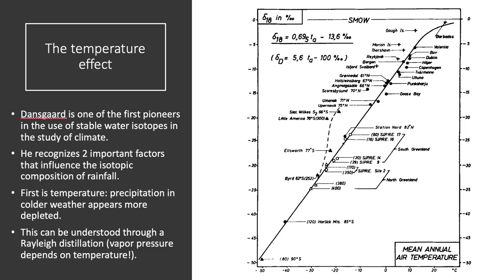He started realizing that rainfall had a certain isotopic composition, and freshwater had a different isotopic composition. This led to the use of water isotopes in the study of climate. Dansgaard recognized two important factors affecting the isotopic composition of water. The first is the temperature effect: precipitation in colder weather appears more depleted — it has lower abundance of heavy isotopes — than precipitation in warmer weather. This can be understood through a Rayleigh distillation paradigm.